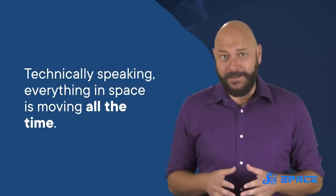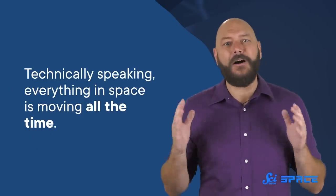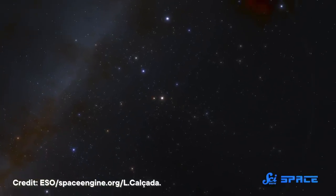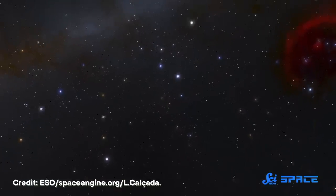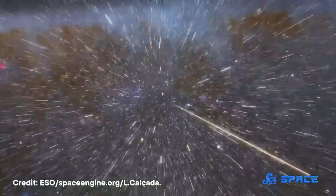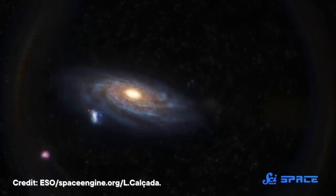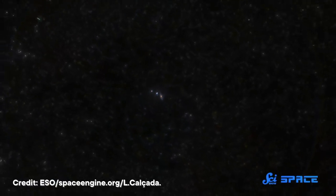Now, technically speaking, everything in space is moving all the time. Planets orbit stars, which orbit the center of galaxies, which move around in galaxy clusters. And the space between galaxies is constantly stretching, pushing most of them apart from one another.